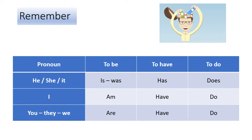We have seven pronouns: he, she, it, I, you, they, we. And we have three types of helping verbs: to be, to have, to do.